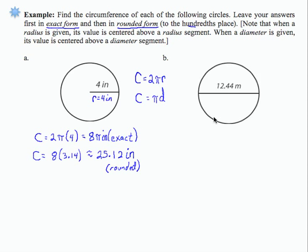In my second example, I'm given a measurement all the way across the circle. That is the measure of the diameter. D is 12.44 meters. So I can use the alternative form for circumference, which is pi times the diameter. I'm going to write the diameter in front, 12.44 times pi.